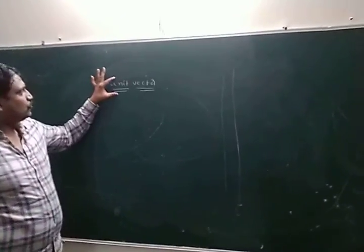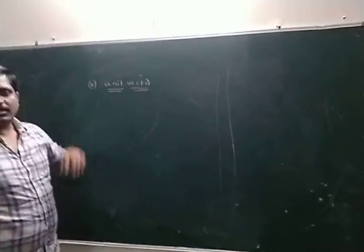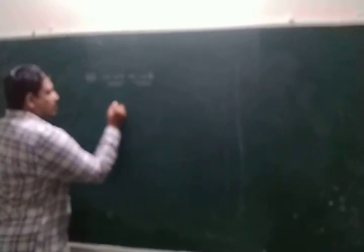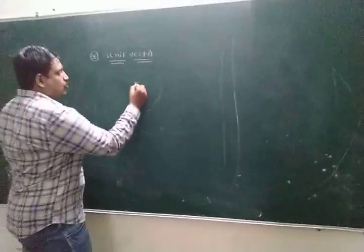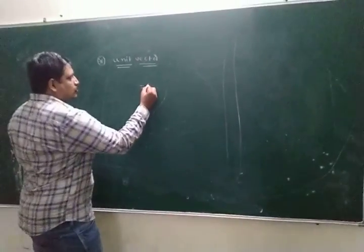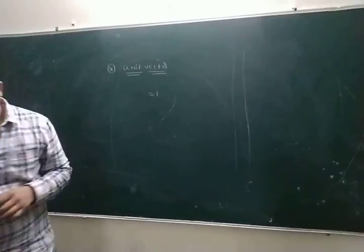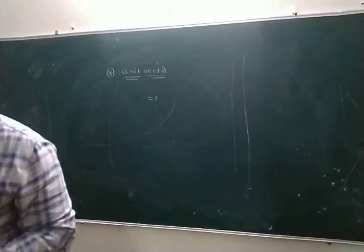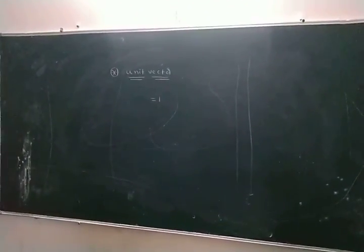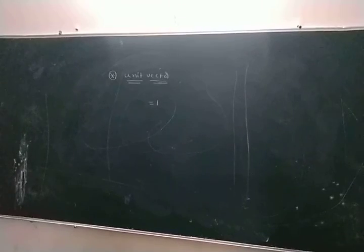Vector unit. In physics, 'unit' means eight — eight means single and one. Simply, the vector whose magnitude is equal to one is called a unit vector.